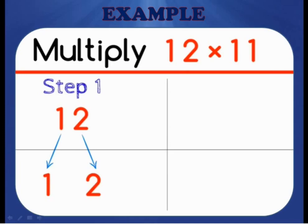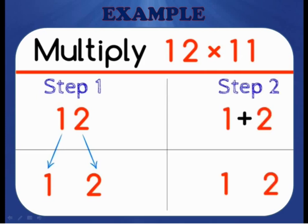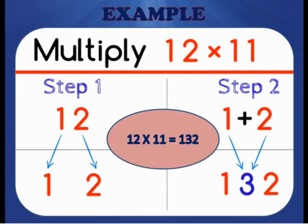Let's understand it with an example. Here, I am going to multiply 12 into 11. First, we have to separate the digits of the original number, that is 1 and 2, by leaving a gap in between. Next, we add the digits: 1 plus 2 equals 3. Then we place the sum 3 in the middle of the original number and we get the answer 132. Therefore, 12 into 11 equals 132.